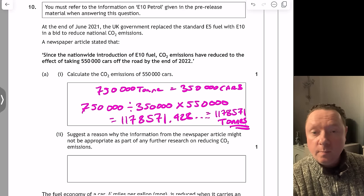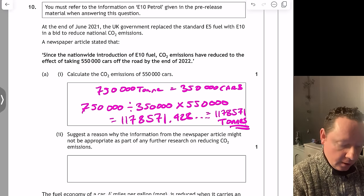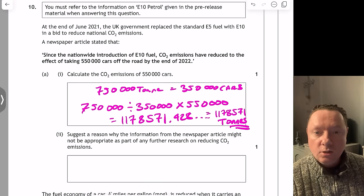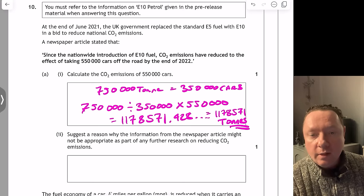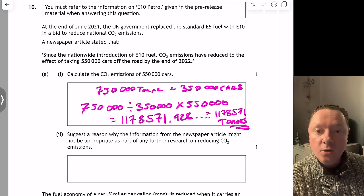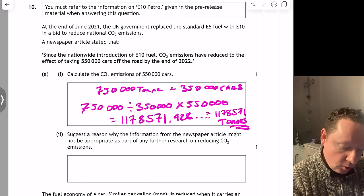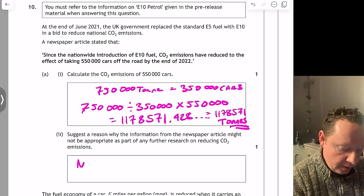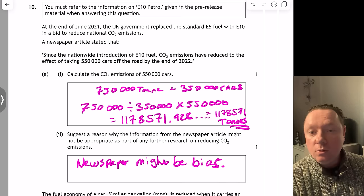Part B: suggest a reason why the newspaper article might not be appropriate for further research on reducing CO2 emissions. Possible answers: the newspaper article might be biased; the information might not be accurate; other factors affect CO2 emissions; fuel or cars might change. You cannot say it is not accurate — you can only say it might not be. I'll write: the newspaper article might be biased. You must use 'might' — we don't know it is biased.